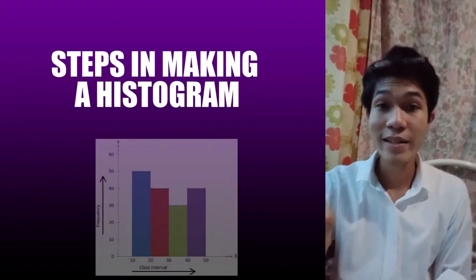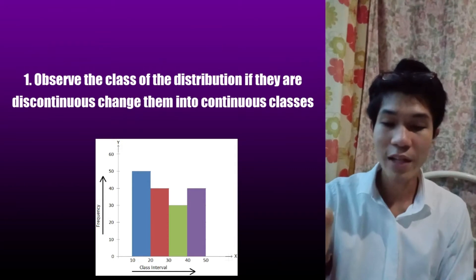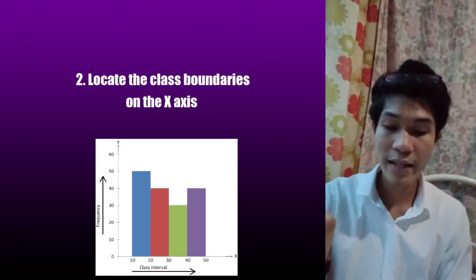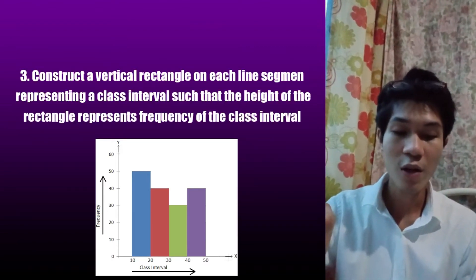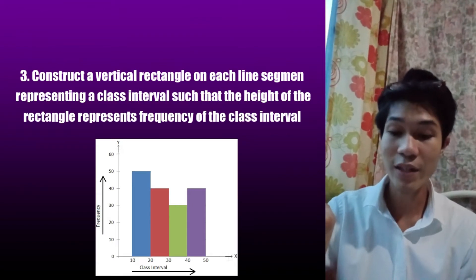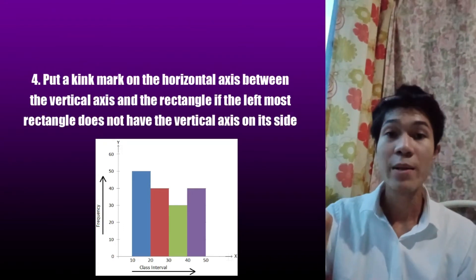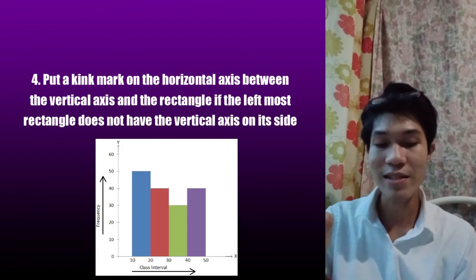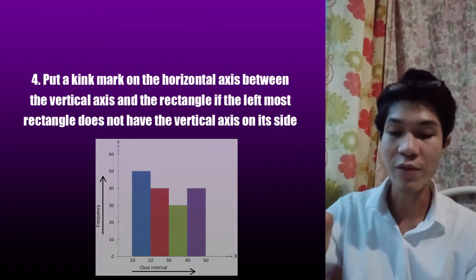Steps in making histograms. Step 1: Observe the classes of the distribution; if they are discontinuous, change them into continuous classes. Step 2: Locate the class boundaries on the x-axis. Step 3: Construct a vertical rectangle on each line segment representing a class interval such that the height of the rectangle represents the frequency of the class interval. Step 4: Put a kink mark on the horizontal axis between the vertical axis and the first rectangle if the leftmost rectangle does not have the vertical axis on each side.